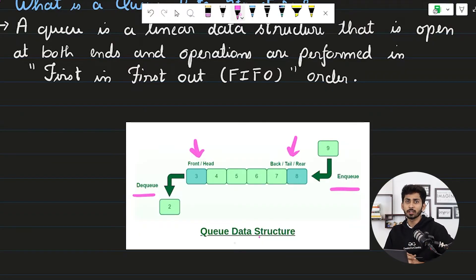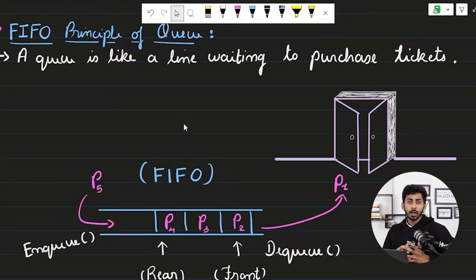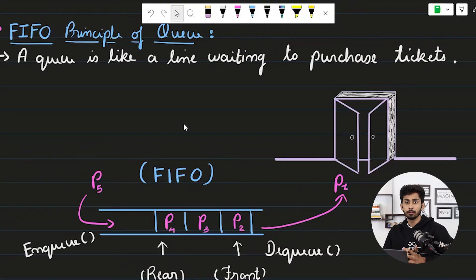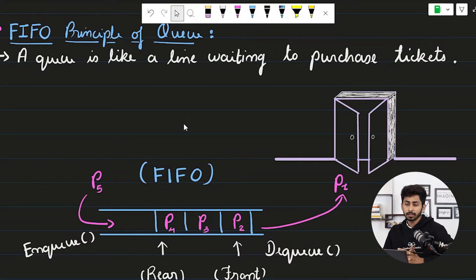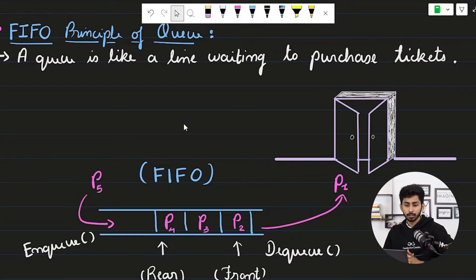This is what a queue data structure means. It follows the FIFO — first in first out — principle. You can imagine a queue like a line waiting to purchase tickets. For example, if you've gone to a movie hall and are waiting in a queue to buy tickets, that represents a queue.